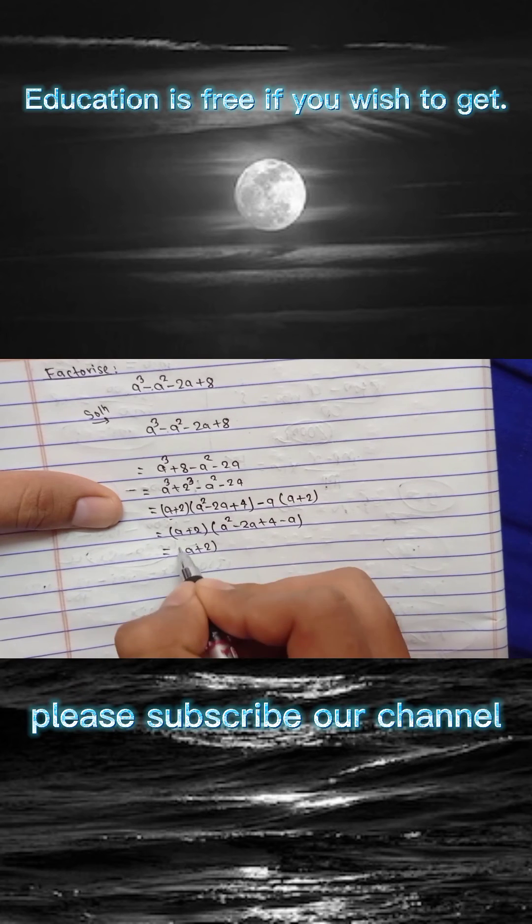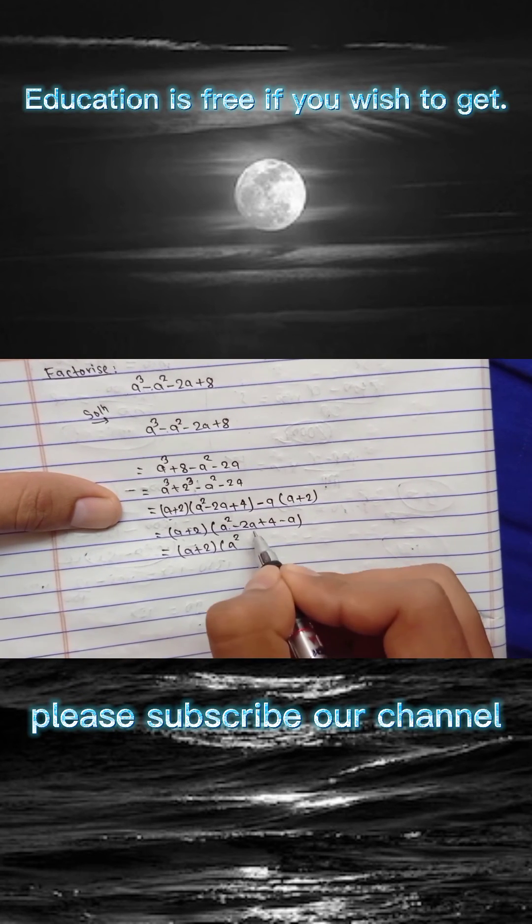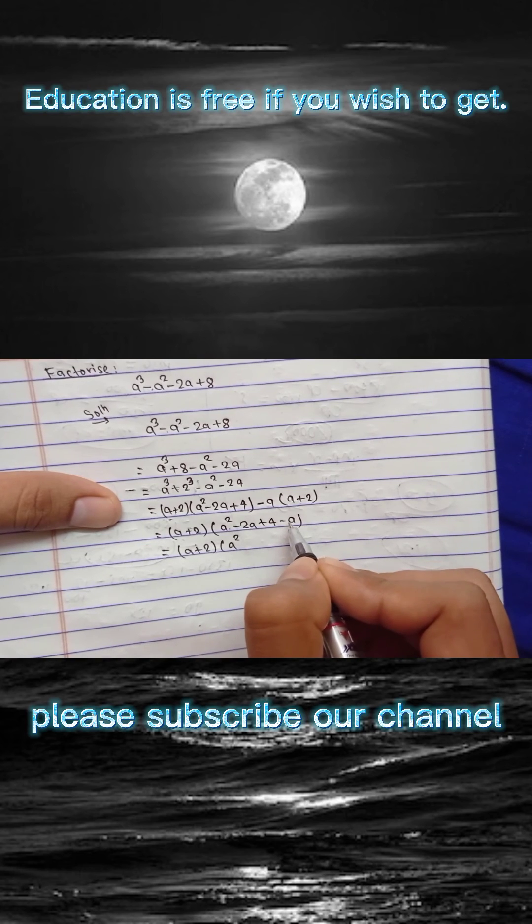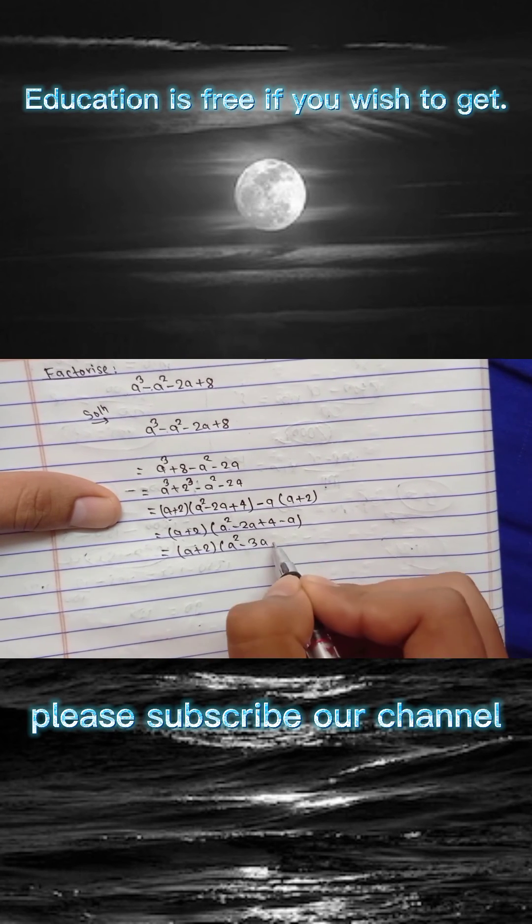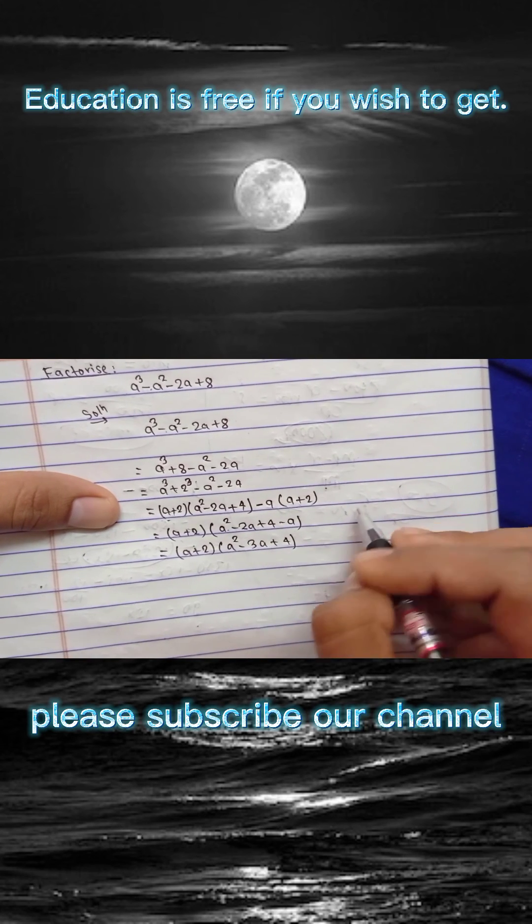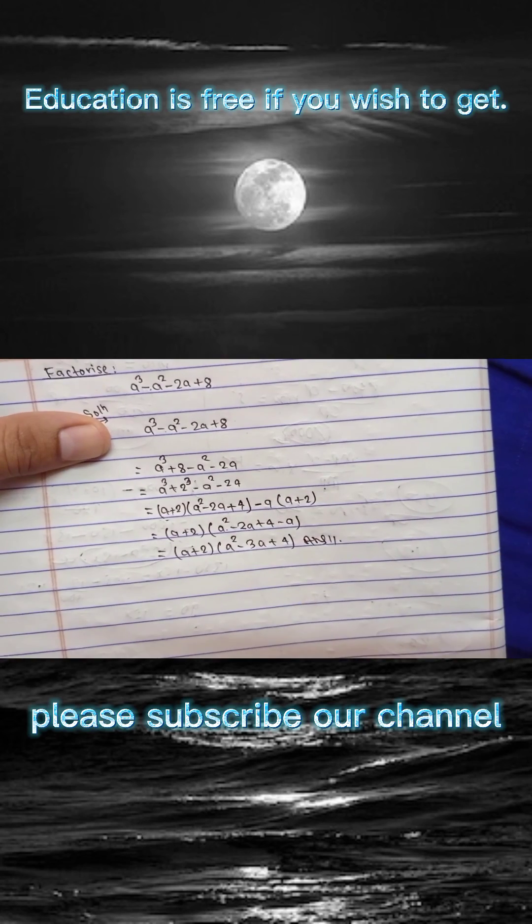In next step this is a plus 2, and here you can see a² is a² and minus 2a and minus a is minus 3a, and this is 4 and this is plus 4. This is the factorized form and this is our answer.